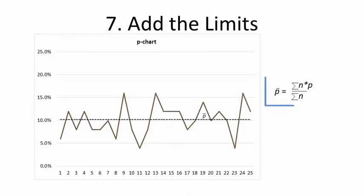Next, add the limits. Calculate p-bar, or the average of the data set, using between 25 and 30 subgroups. This is your baseline logo churn rate. Plot this horizontal line.